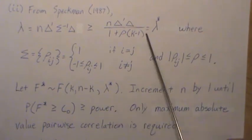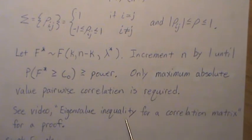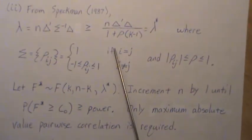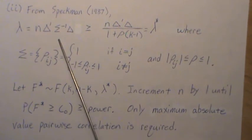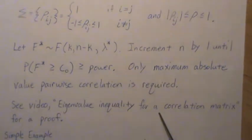But the beauty is we only use the maximum absolute value of the pairwise correlation, not the whole covariance matrix. Now, a proof of this, I have a video out that I call 'Eigenvalue Inequality for a Correlation Matrix,' where I show how Speckman proved this. And then I also add in another little twist into this video.